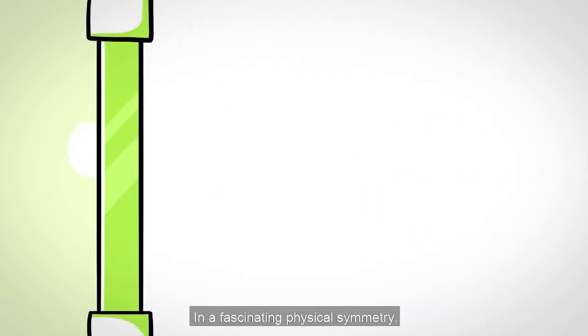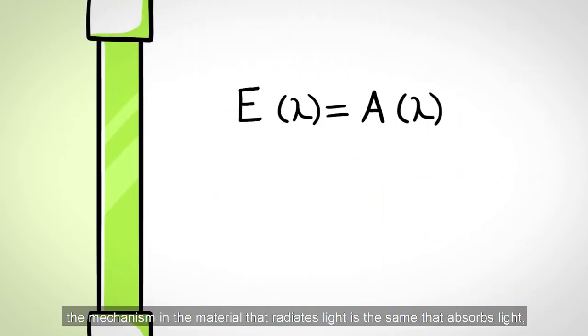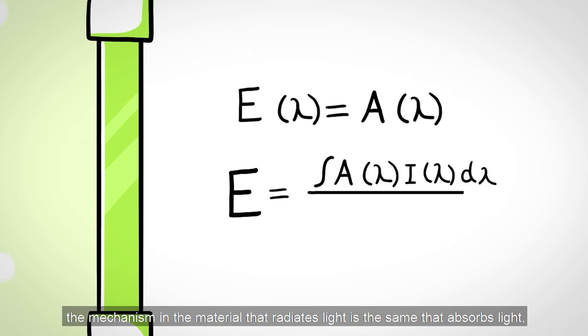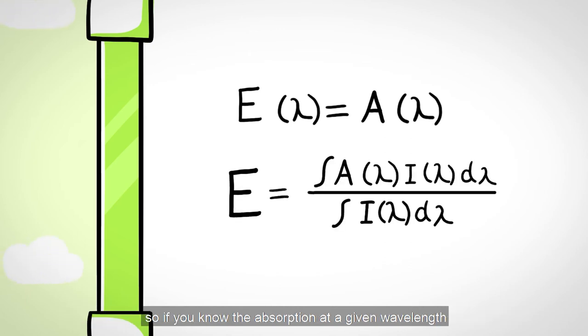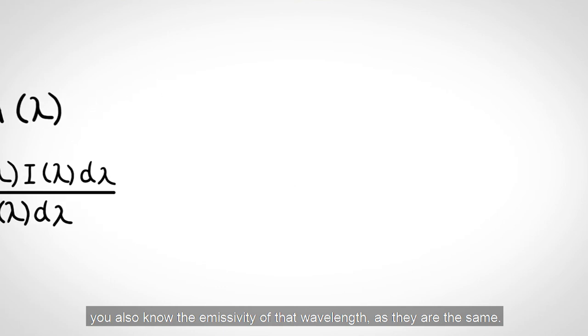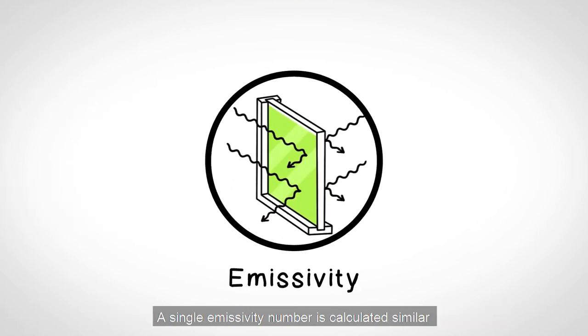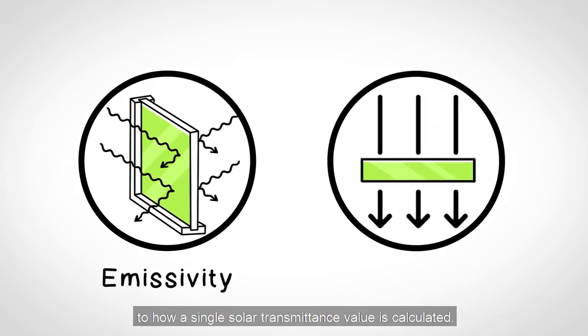In a fascinating physical symmetry, the mechanism in the material that radiates light is the same that absorbs light. So if you know the absorption at a given wavelength, you also know the emissivity at that wavelength, as they are the same. A single emissivity number is calculated similar to how a single solar transmittance value is calculated.